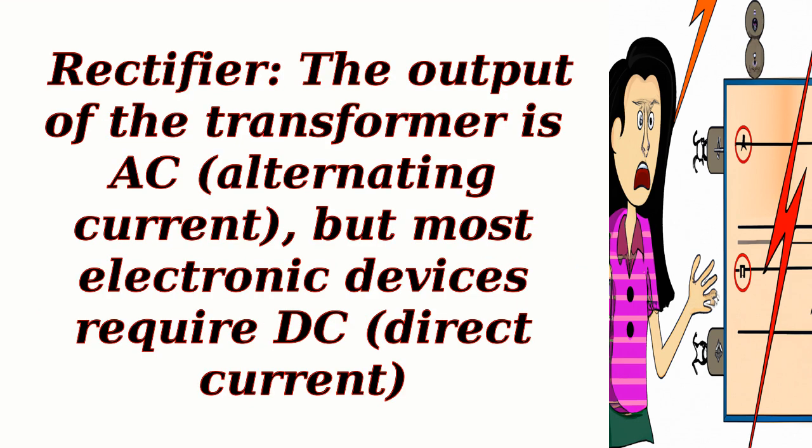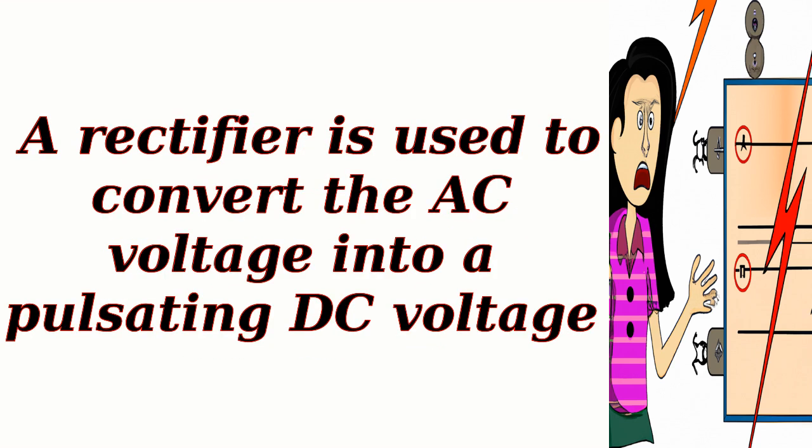Rectifier. The output of the transformer is AC (alternating current), but most electronic devices require DC (direct current). A rectifier is used to convert the AC voltage into a pulsating DC voltage.